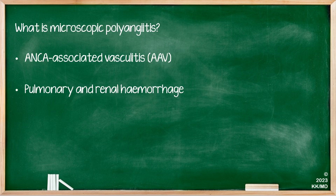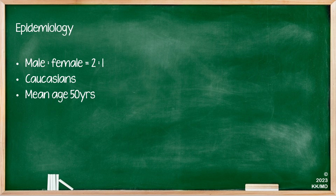What is microscopic polyangiitis? It's a type of ANCA-associated vasculitis and very frequently it presents with pulmonary and renal haemorrhage. As for its epidemiology, it's twice as common in males than in females, it's more common in Caucasians, and the mean age of presentation is usually around 50.